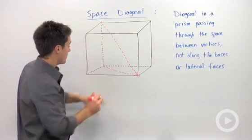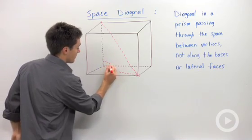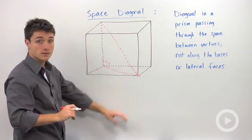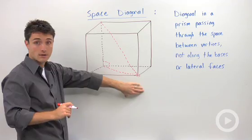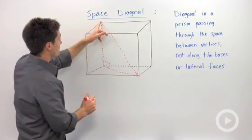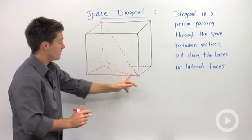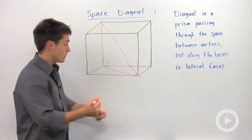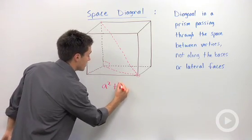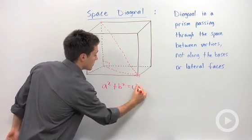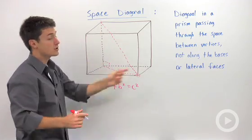So if you know that this is a right angle, which it will be because these problems will only apply to rectangular prisms, then you can find one leg, find the other leg, and then use the Pythagorean Theorem, a squared plus b squared equals c squared, to find the length of your space diagonal.